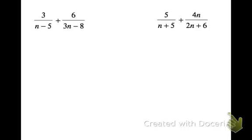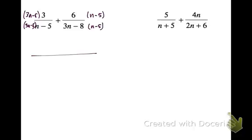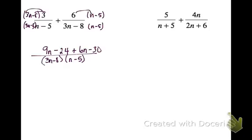Next one. I can't factor the denominators — I can't pull anything out between 3n minus 8. So I'll do the same thing as before: multiply top and bottom by 3n minus 8, and top and bottom by n minus 5. My common denominator is 3n minus 8 times n minus 5. Distributing 3 gives 9n minus 24, and distributing 6 gives plus 6n minus 30. Combining like terms on the top gives 15n minus 54, all over 3n minus 8 times n minus 5.